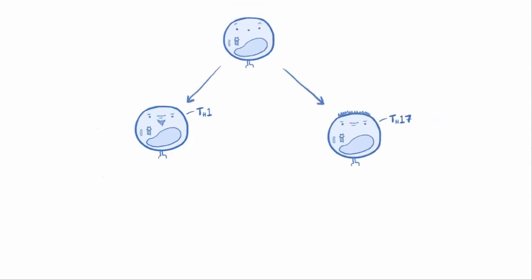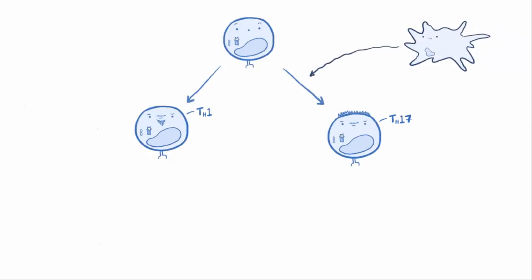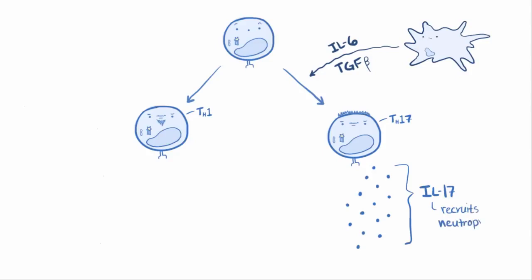In addition to TH1 cells, a naive T helper cell might differentiate into TH17 cells, which is just another subclass of T helper cells. These TH17 cells develop in response to dendritic cells secreting slightly different cytokines — interleukin-6 and transforming growth factor beta. The resulting TH17 cells produce interleukin-17, which is particularly important to recruiting neutrophils.